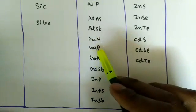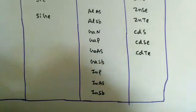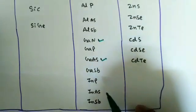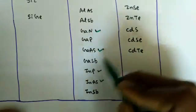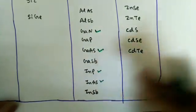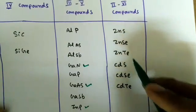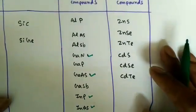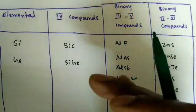Further 3rd–5th group compounds include gallium phosphide, gallium arsenide, gallium antimonide, indium phosphide, indium arsenide, and indium antimonide. Among these, gallium arsenide and gallium nitride are most frequently used, along with indium phosphide and indium arsenide. Gallium arsenide is important for light emitting diodes. The 2nd–6th group compounds include zinc sulfide, zinc selenide, zinc telluride, cadmium sulfide, cadmium selenide, and cadmium telluride.